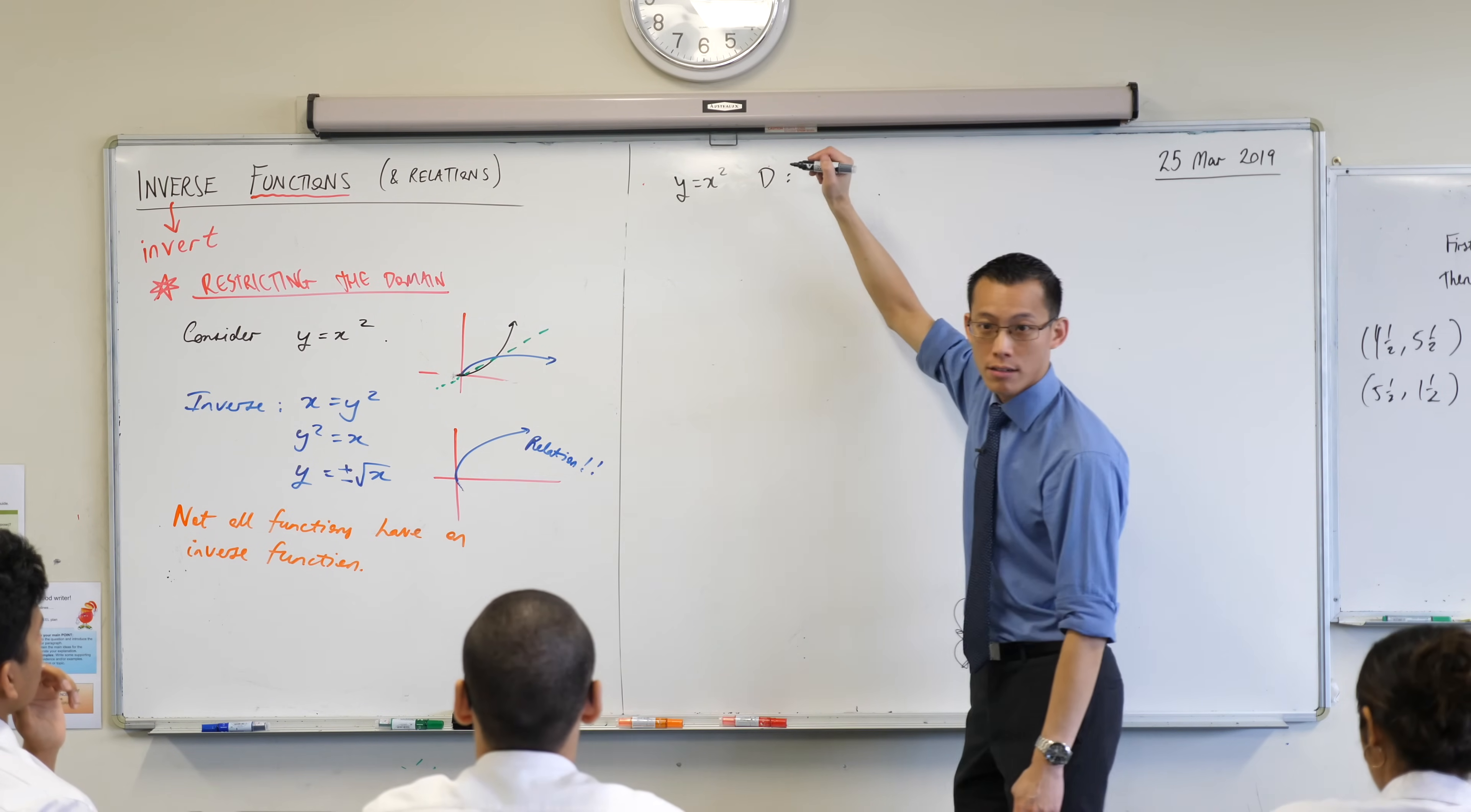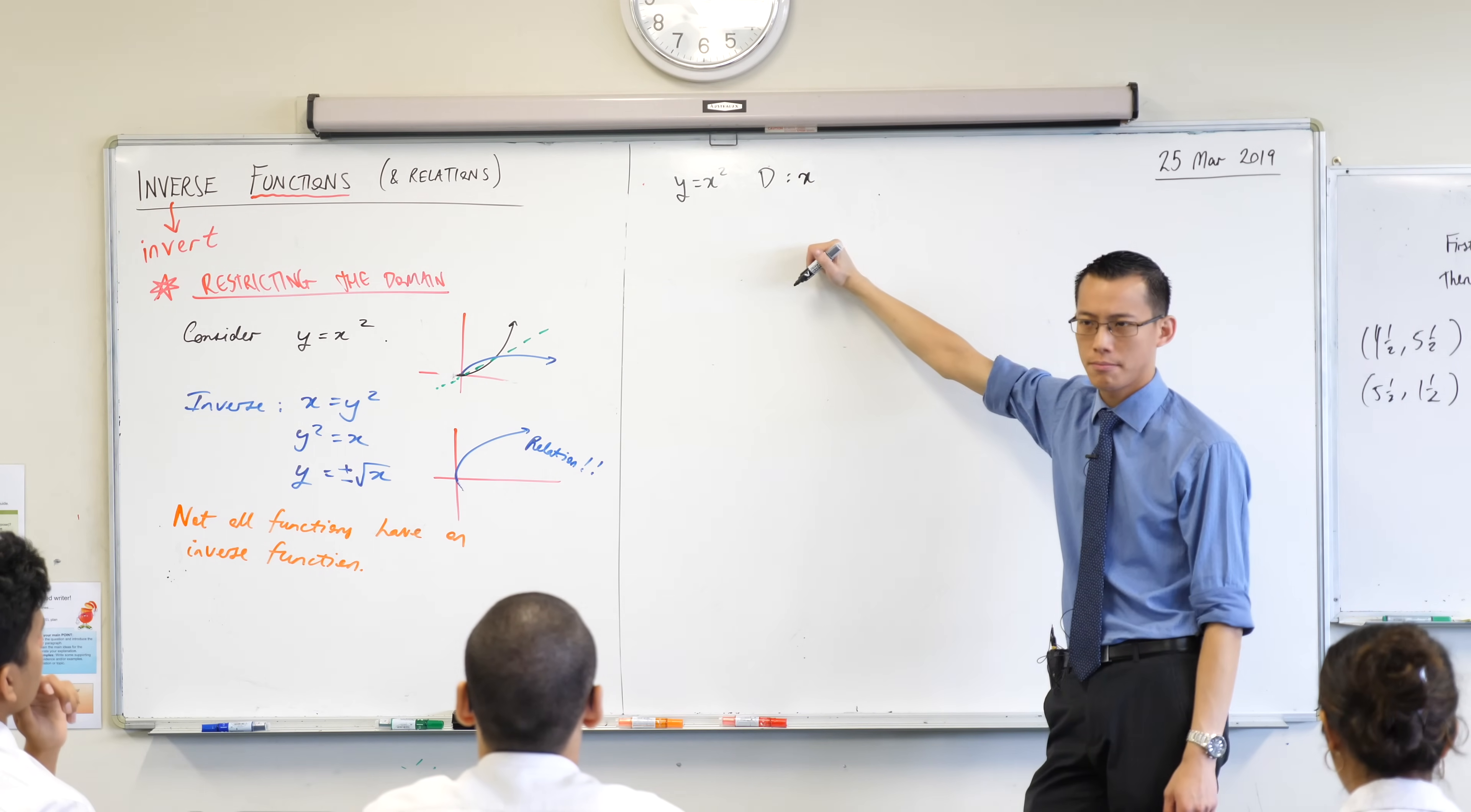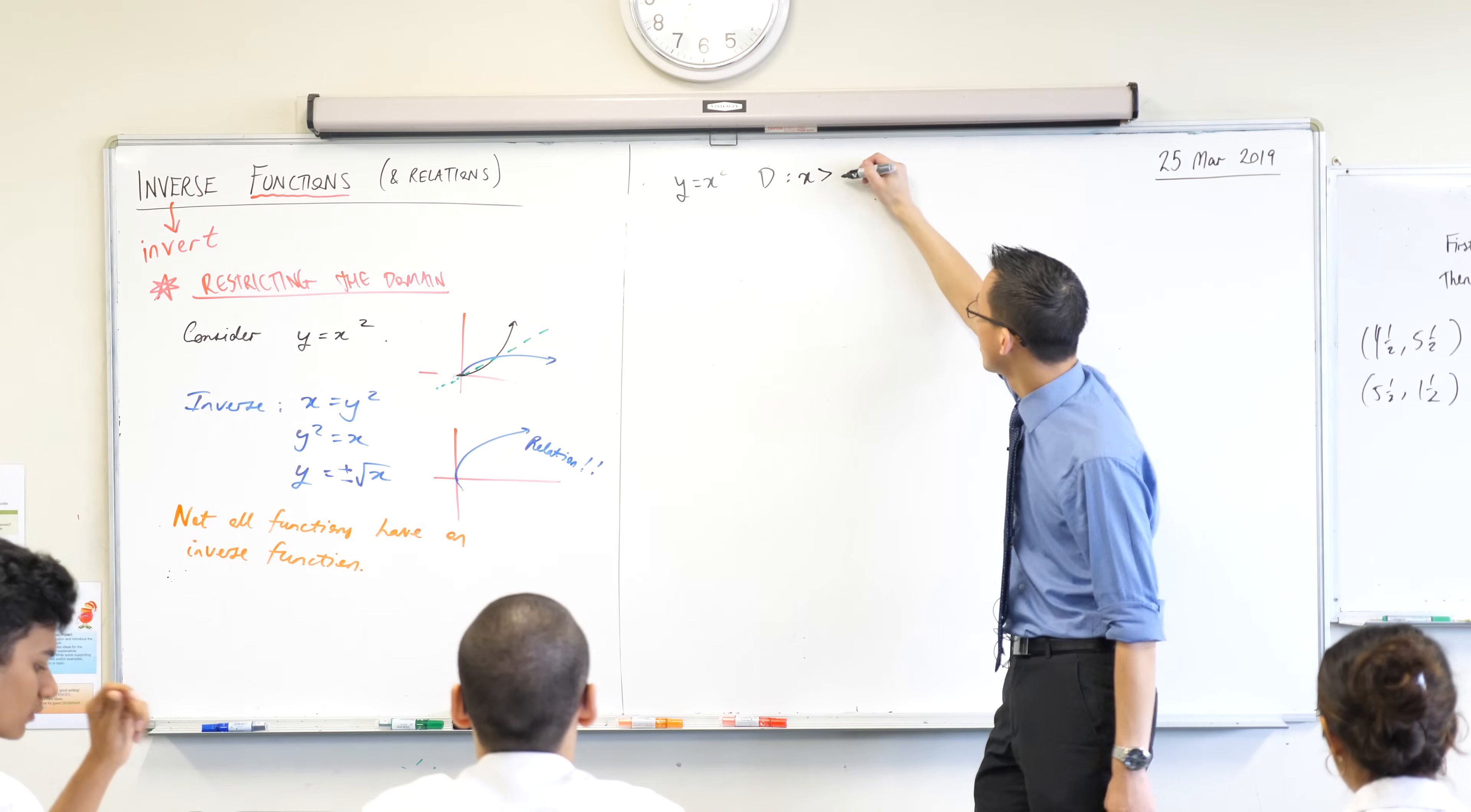I'm going to make its domain x is... Well, how would I say this is an inequality? What part of the graph have I got? What values of x? Greater than zero. Greater than... Do you reckon I can include zero? Yeah. I think including zero is okay.